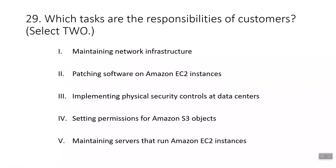Question twenty-nine: which tasks are the responsibilities of customers? Select two. The correct answers are patching software on Amazon EC2 instances and setting permissions for Amazon S3 objects. Maintaining network infrastructure, implementing physical security controls at data centers, and maintaining servers that run Amazon EC2 instances are responsibilities of AWS, not customers.